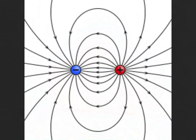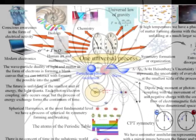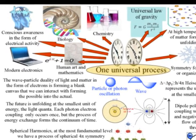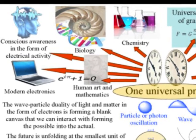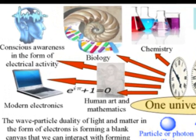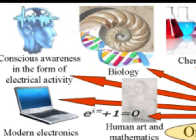The second reason why this theory is difficult to comprehend is represented in the top left hand corner of the diagram, and it is because conscious awareness in the form of electrical activity in the brain is an integral part of this process.